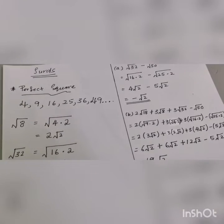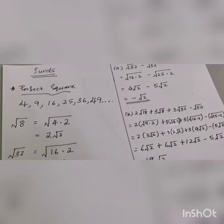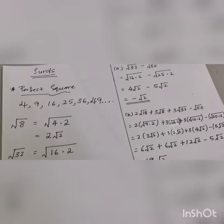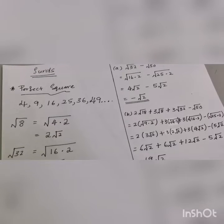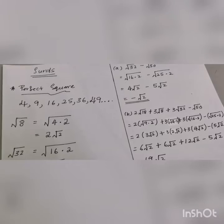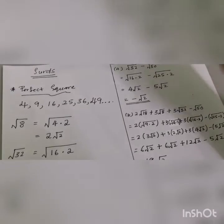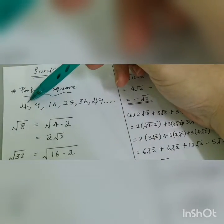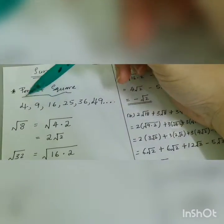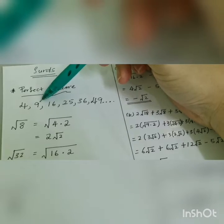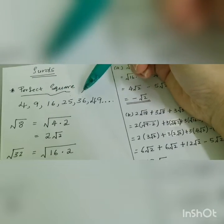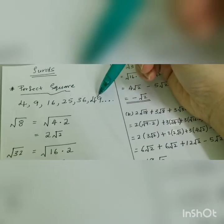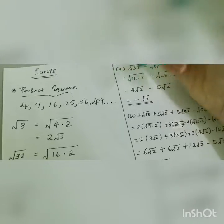Today we learn about surds. Before you learn this chapter or subtopic, you must know perfect squares. Perfect squares are like 2 times 2 becomes 4, 3 times 3 is 9, then 16, 25, 36, and 49.